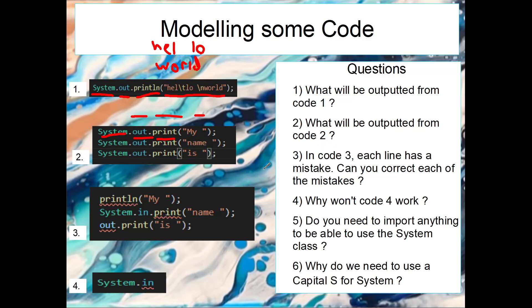Number three: each line has a mistake. So the first one, if we look here, the first one is missing that System.out. So that is the problem here. The second one, you cannot use print with in because that means input, so we have to change that from in to out, so System.out.print. And the last one, again it's missing that System, so it should be System.out and then they would be fine.